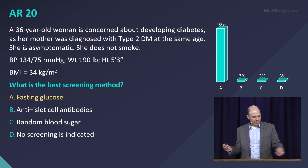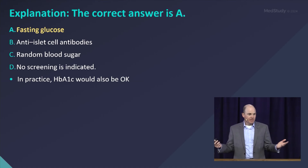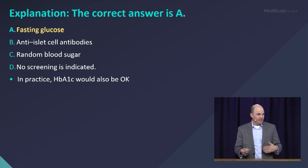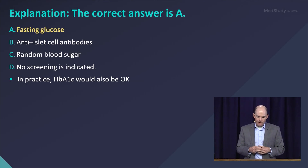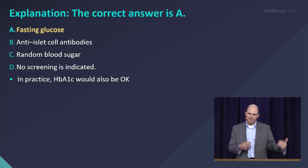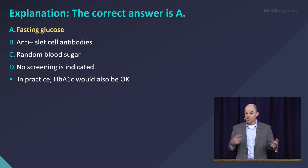The correct answer is fasting glucose, and most of us got that right. Fasting glucose is a perfectly reasonable screening method for diabetes. You could also check a hemoglobin A1C or an oral glucose tolerance test — those are all effective screening techniques. Random blood sugar is not always going to be elevated, so there's a high chance of a false negative, especially if it's a fasting state. This patient should be screened because she is obese.